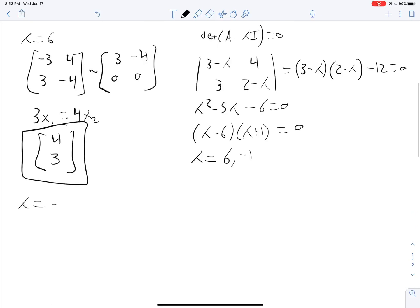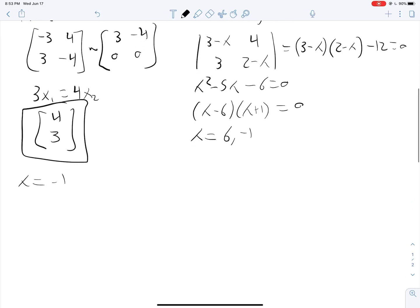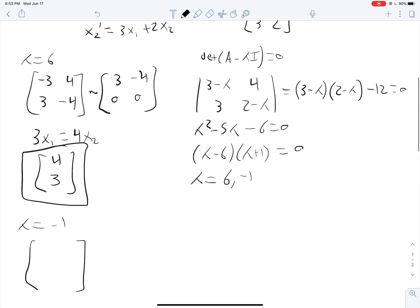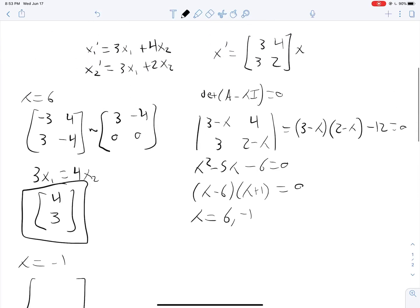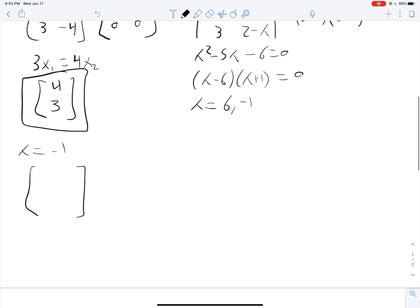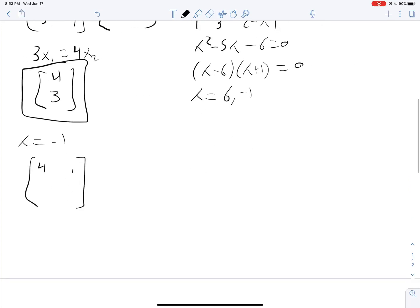Let's use lambda is equal to negative 1 to find our second eigenvector. A minus lambda i equals 0. That will give us 3, 4, 3, 2. So that will be 4, 4, 3, 3. That simplifies down to 1, 1, 0, 0. And from that, we get an eigenvector of negative 1, 1.